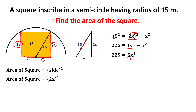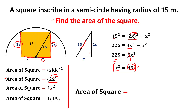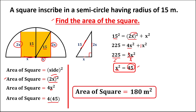To solve for x, divide both sides by 5. Therefore x² equals 225 divided by 5, which equals 45. Using x² = 45 to find the area: (2x)² equals 4x². We can replace x² with 45. So the area of the square equals 4 times 45, which is 180 square meters.